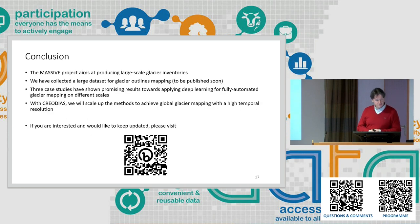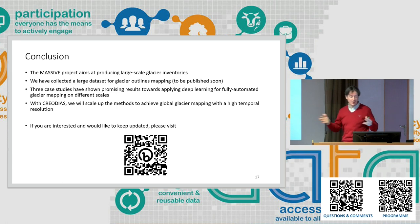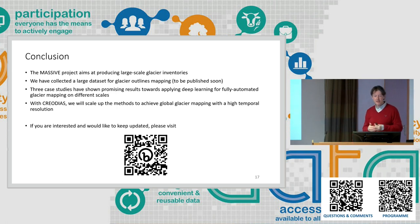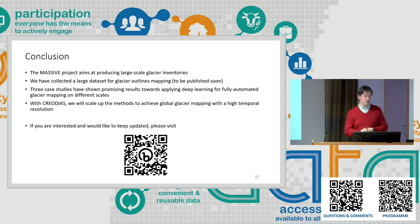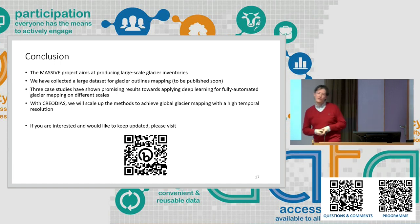Some final thoughts: the MASSIF project aims at producing large-scale inventories of glaciers — the outlines — and later we will also look at glacier mass balance, which is important for hydrological modeling. So far we have three case studies and hopefully in the near future we can scale up to the global level.